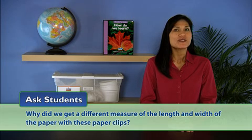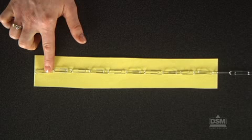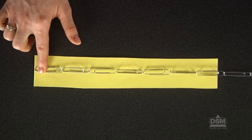Ask the class, why did we get a different measure of the length and width of paper with these paper clips? Students should understand that the paper clips in the chain are all the same size, but that they are smaller than the ones we used. To reinforce the idea that units of the same kind can have variations, hold two chains of ten paper clips for students to compare.